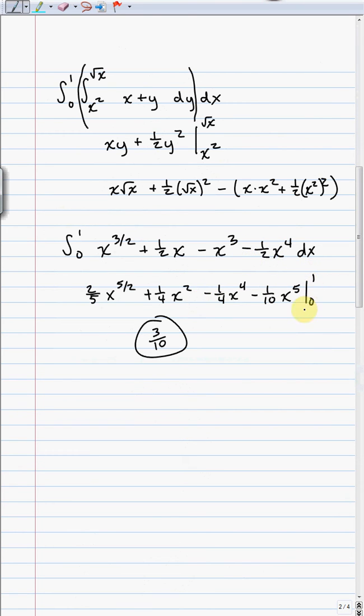Again, plugging in the top bound first, and then subtracting off, plugging in the bottom bound. So in all, we should get an answer of 3 tenths.